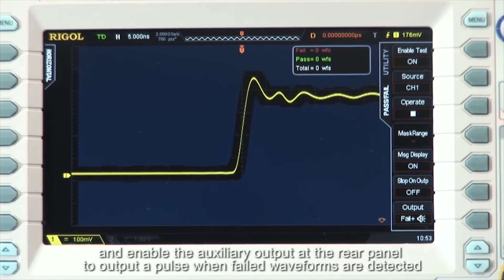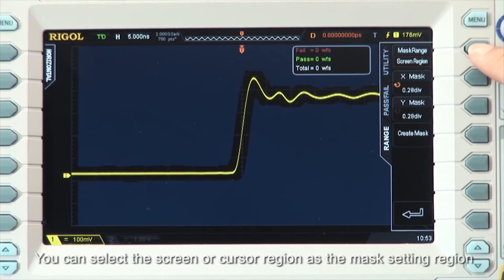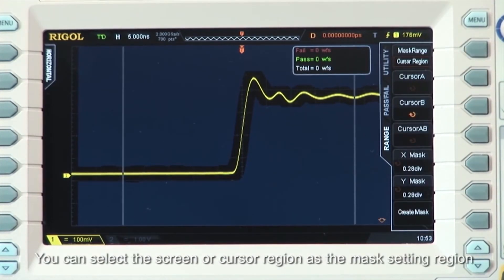Before enabling the test, set the fail region according to your test requirements. You can select the screen or cursor region as the mask setting region.